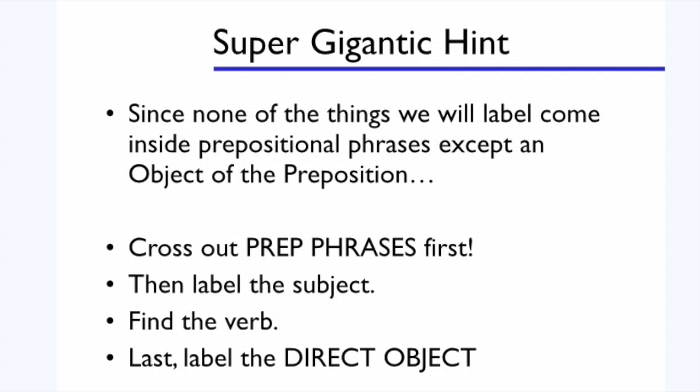Now here is the biggest hint I can give you, not just for direct objects, but for all of the parts of the sentence. And that is to follow these steps anytime you tackle a sentence where you have to label parts of the sentence. Step one, cross out the prepositional phrases. The only thing that can come inside a prepositional phrase is an object to the preposition, so you might as well get rid of them. Then label the subject. Who's doing the verb? Or what's doing the verb? Third, find the verb. Make sure it's an action verb. Because remember, if it's a linking verb, there's something totally different. But action verbs lead to the direct objects.